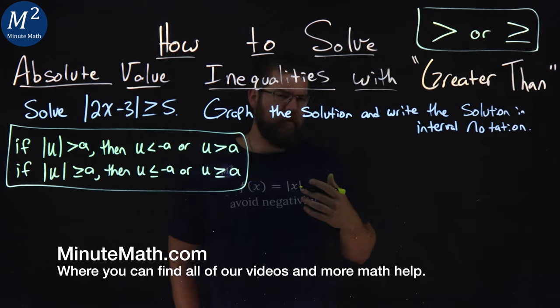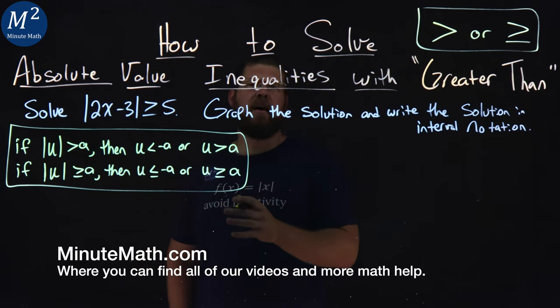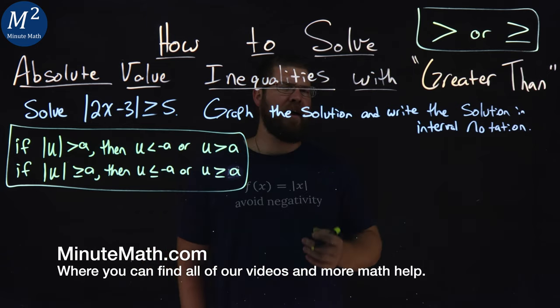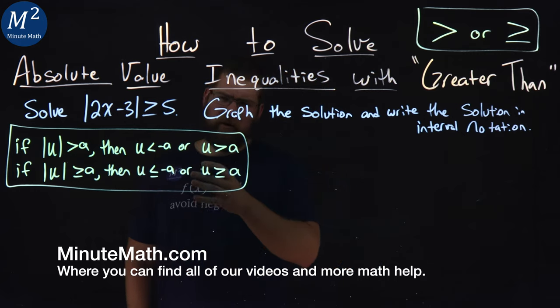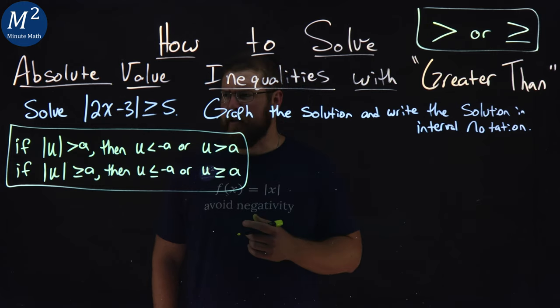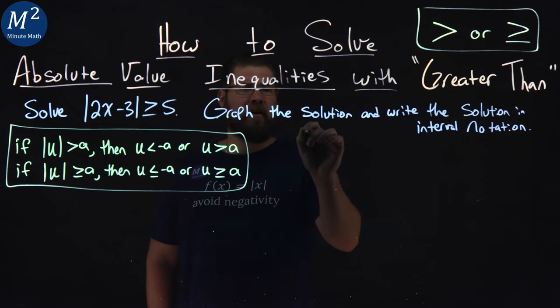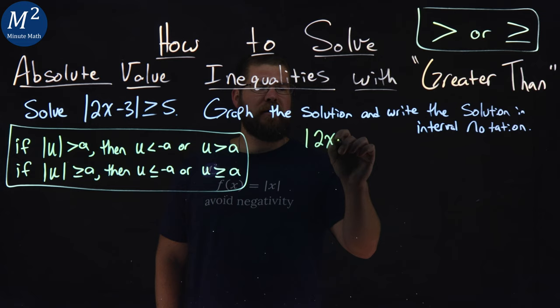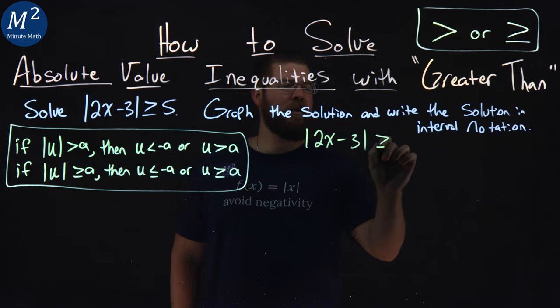If you remember from our previous video, we talked about absolute value inequalities with greater than with a more basic problem. We have a more advanced problem here that can really boost your understanding. We have the absolute value of 2x minus 3 is greater than or equal to 5.